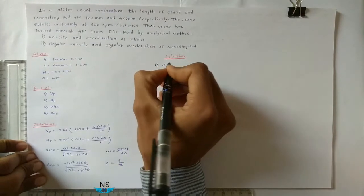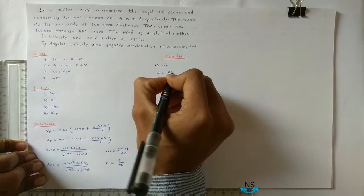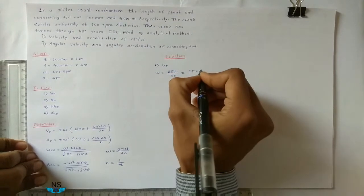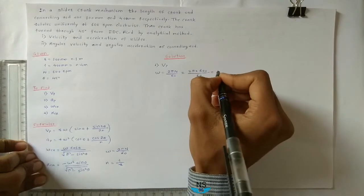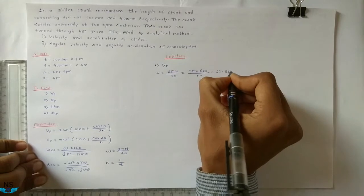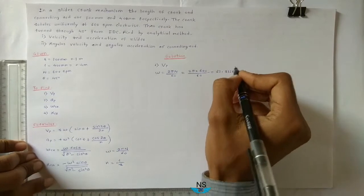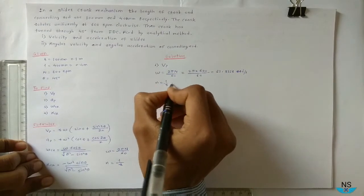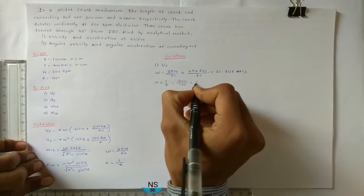Solution. First, compute omega: ω equals 2πN/60 equals 62.8318 rad/s. And n equals L divided by R equals 400 divided by 100 equals 4.